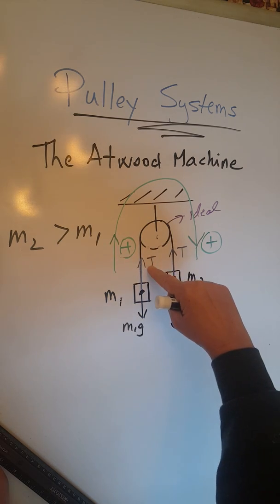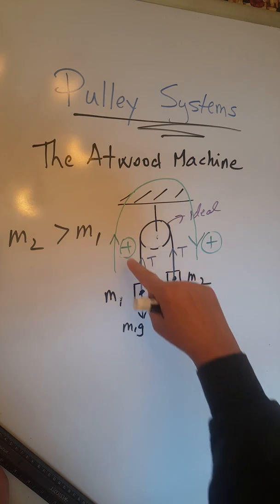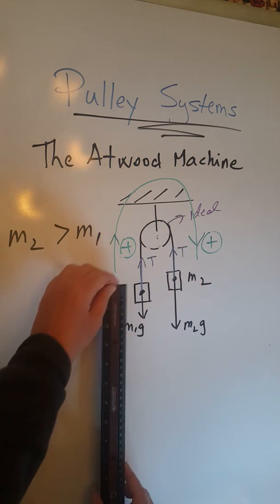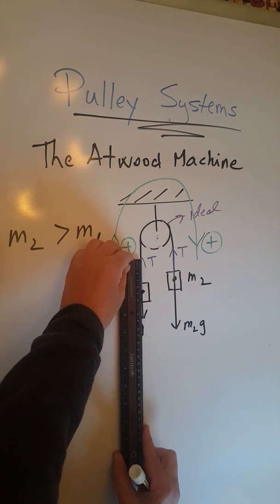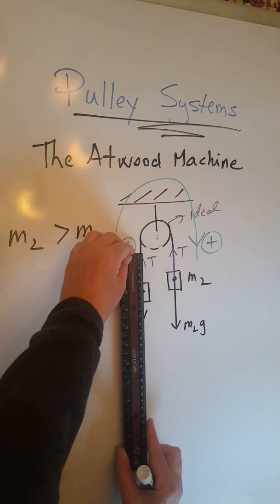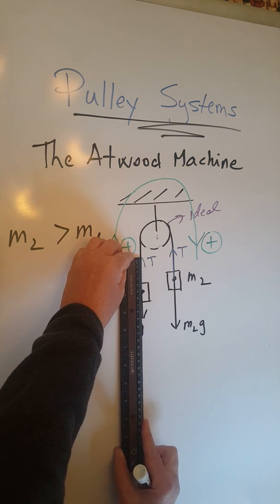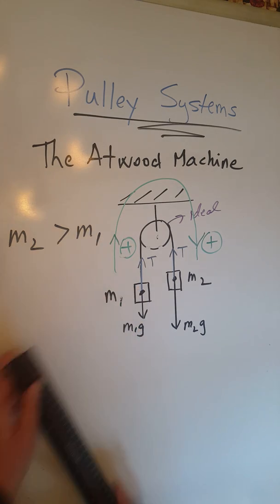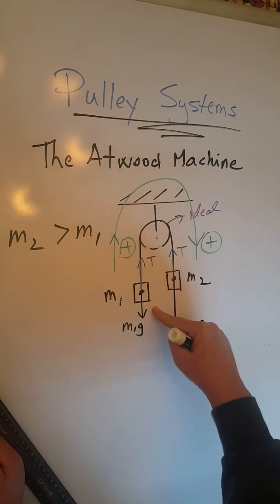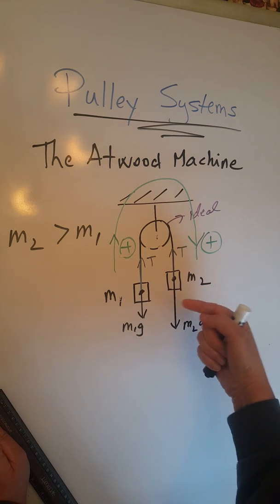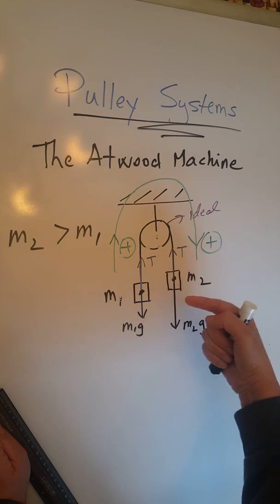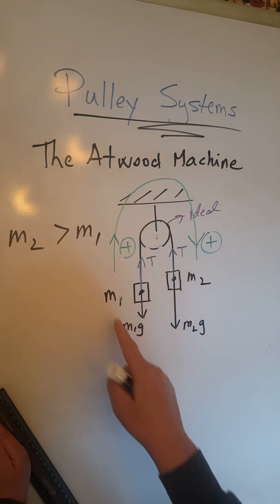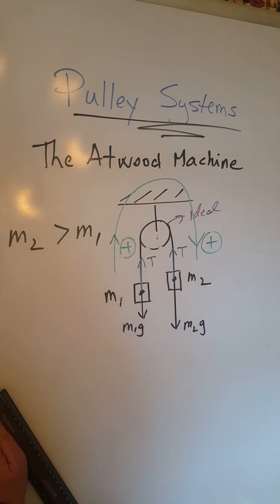For m1, T must be greater than m1g, because m1 accelerates upward. T was measured as 5 centimeters, and m1g here is only 4 centimeters. Since 5 is greater than 4, we have the required unbalance of forces in favor of T, causing m1 to accelerate in that direction.